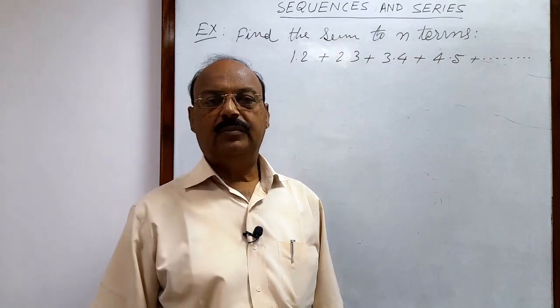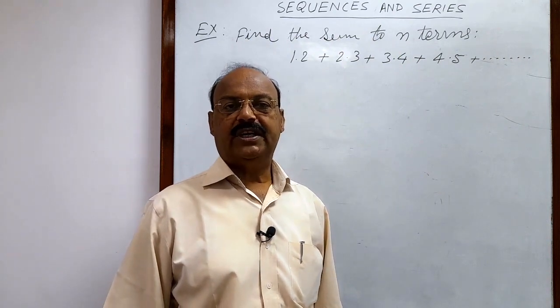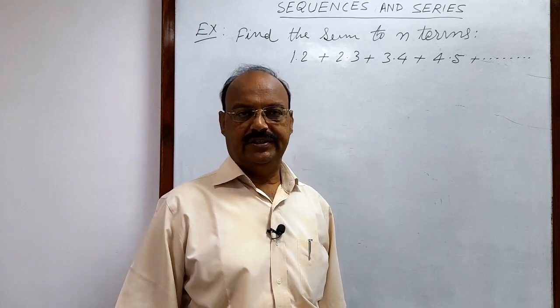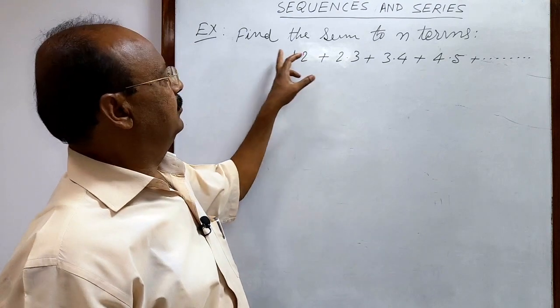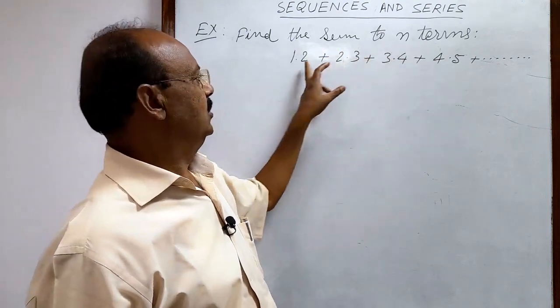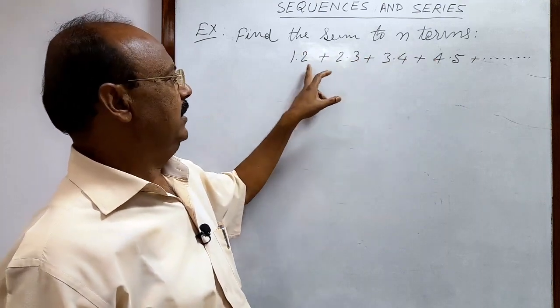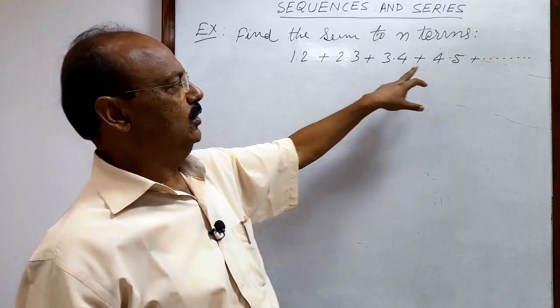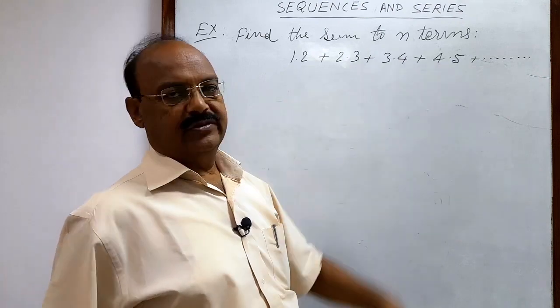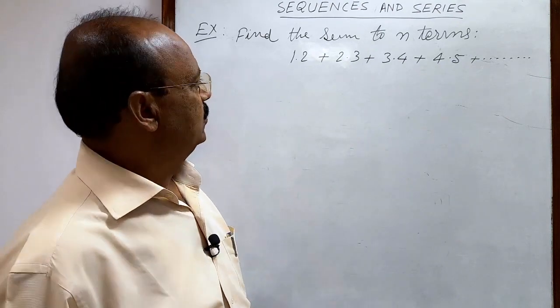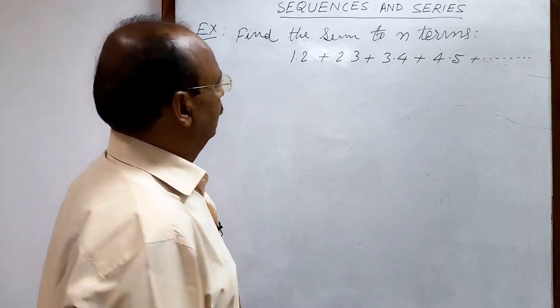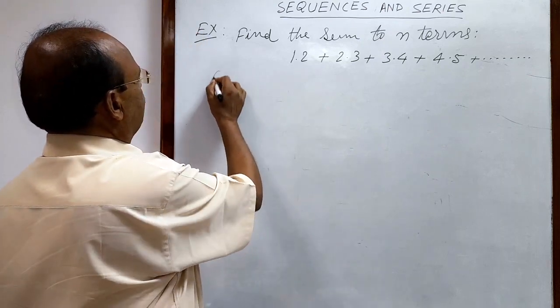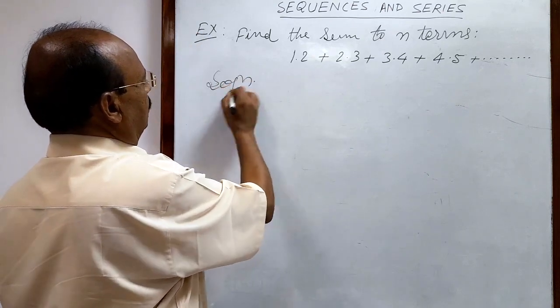Here we will discuss a very simple but important question from the chapter Sequences and Series. The question is: find the sum to n terms. The series is given as 1×2 + 2×3 + 3×4 + 4×5 and so on.